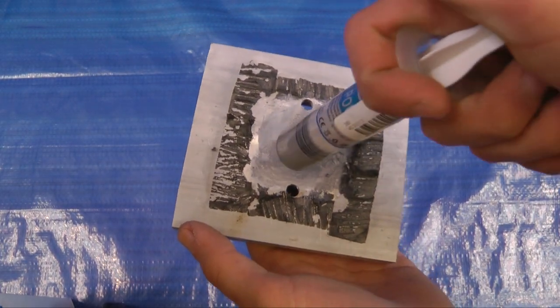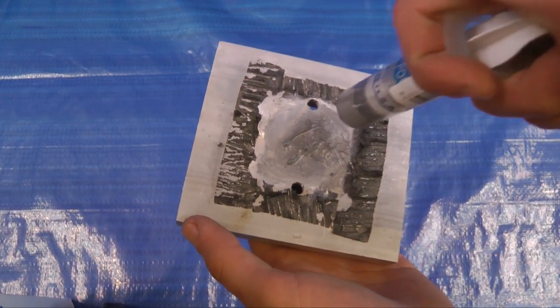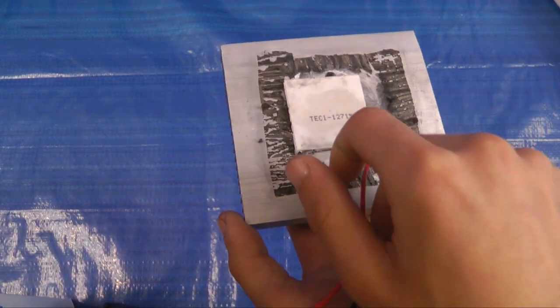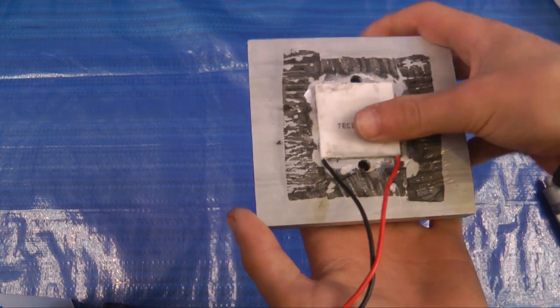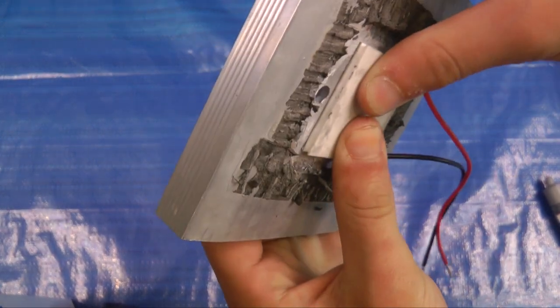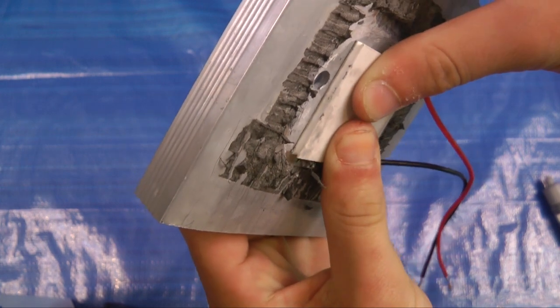So first we're going to take our heat sink and spread a little bit of compound on it. Next we're going to take our 12 volt peltier plate and stick it right in the middle and then move it around while pressing down so it makes good contact with the heat sink.